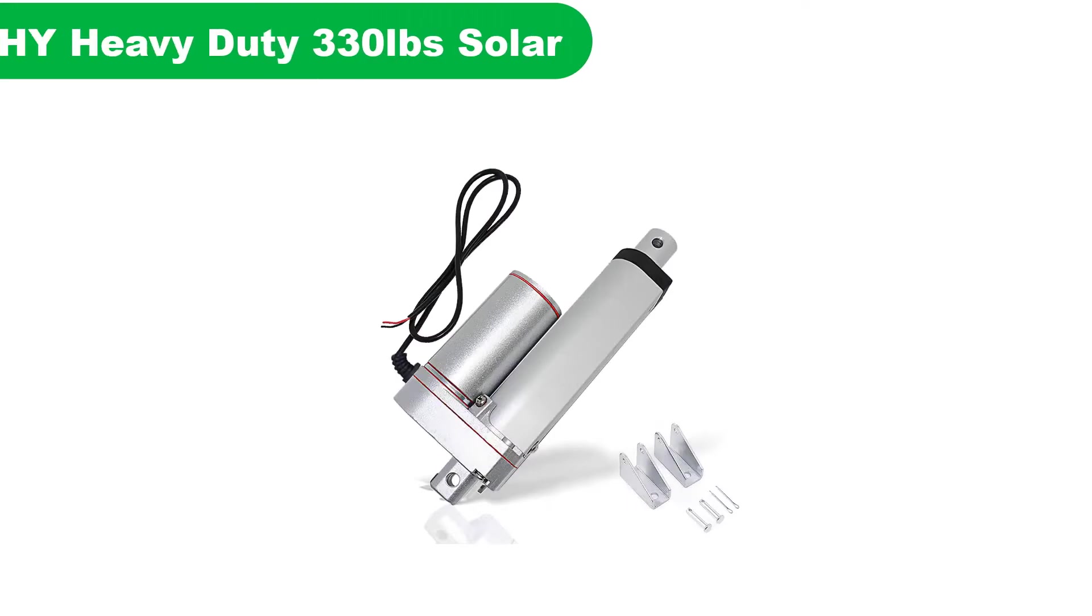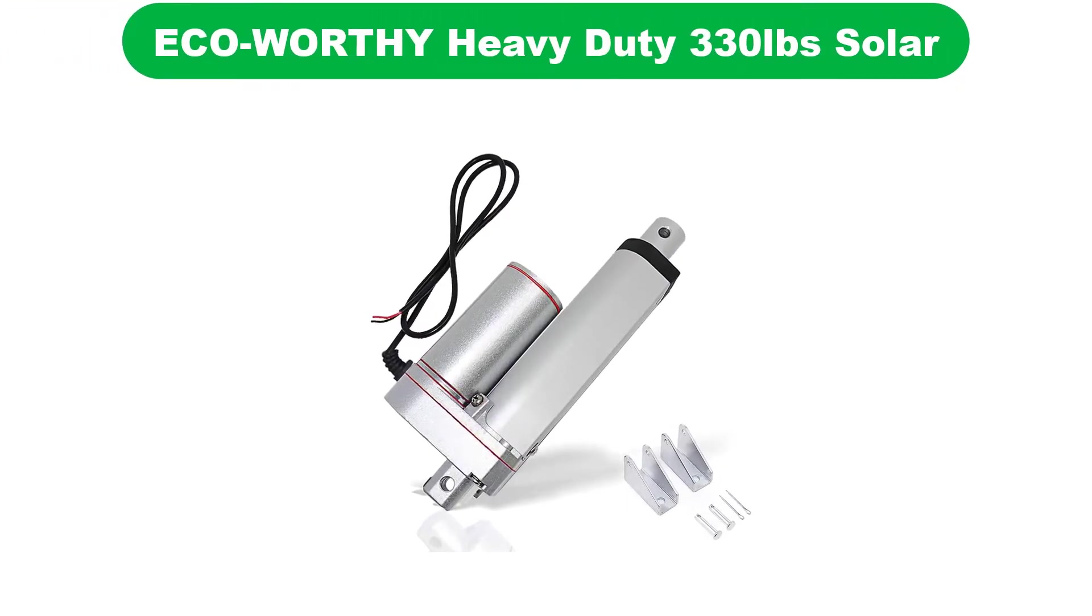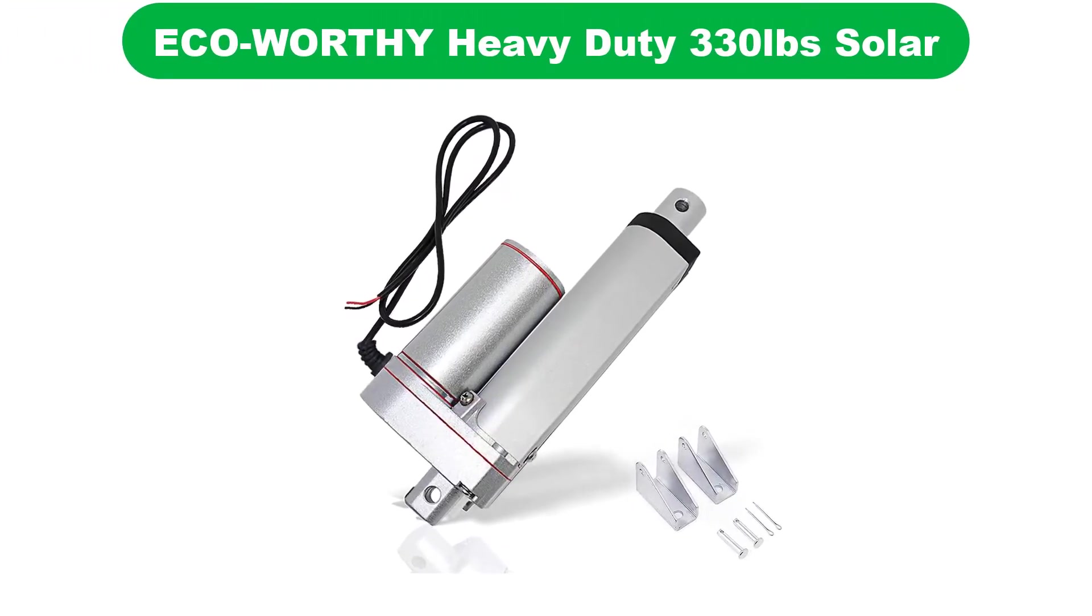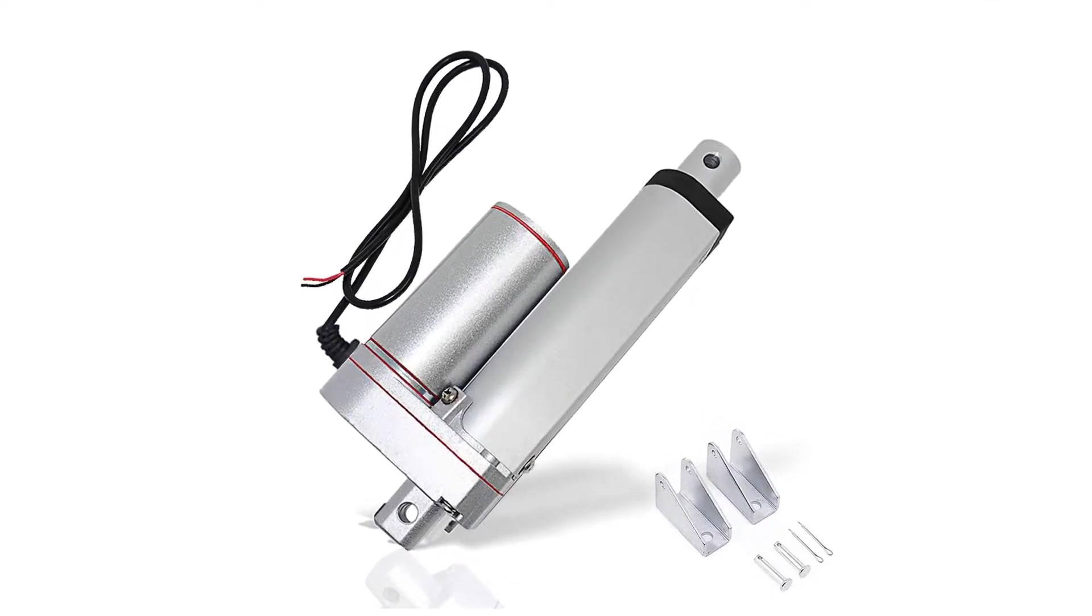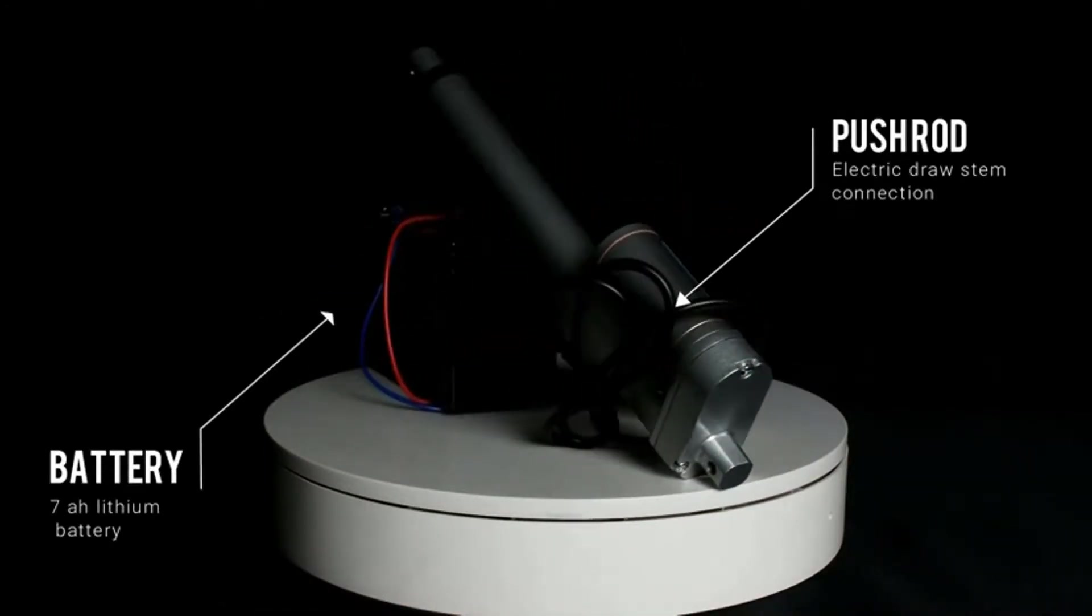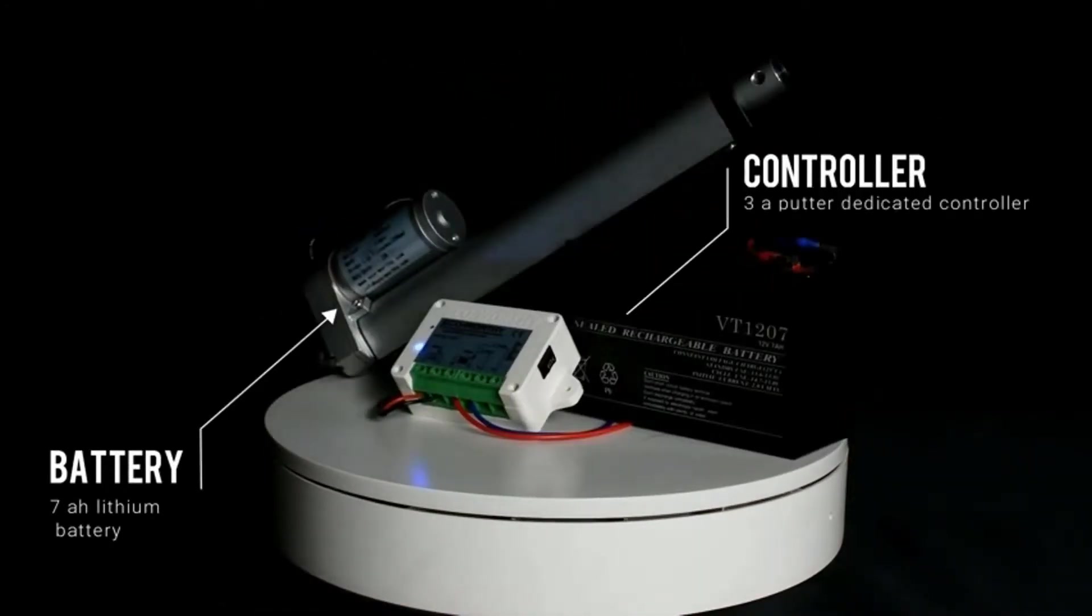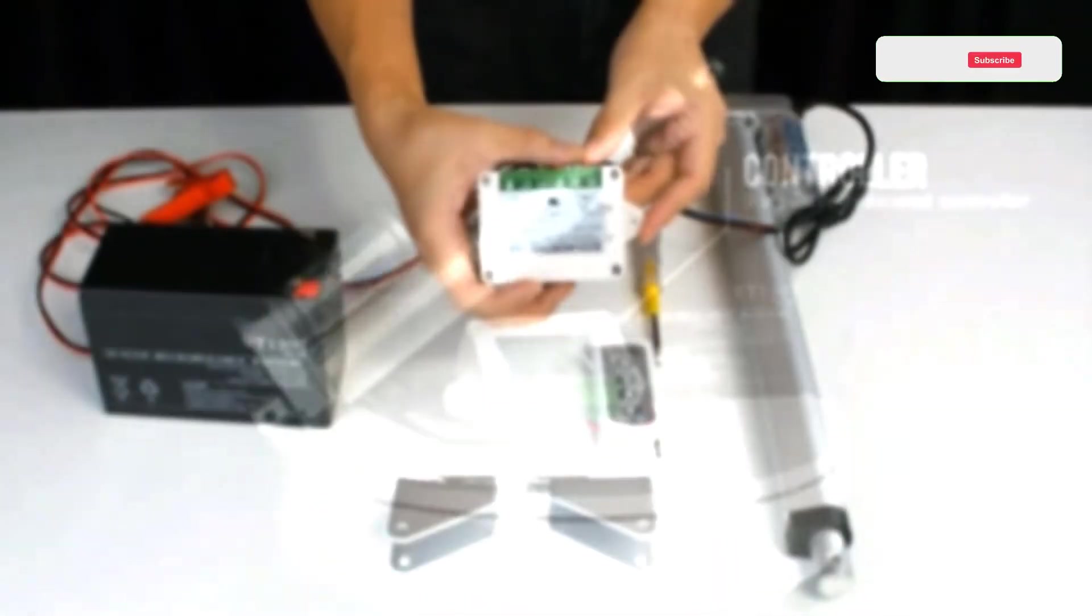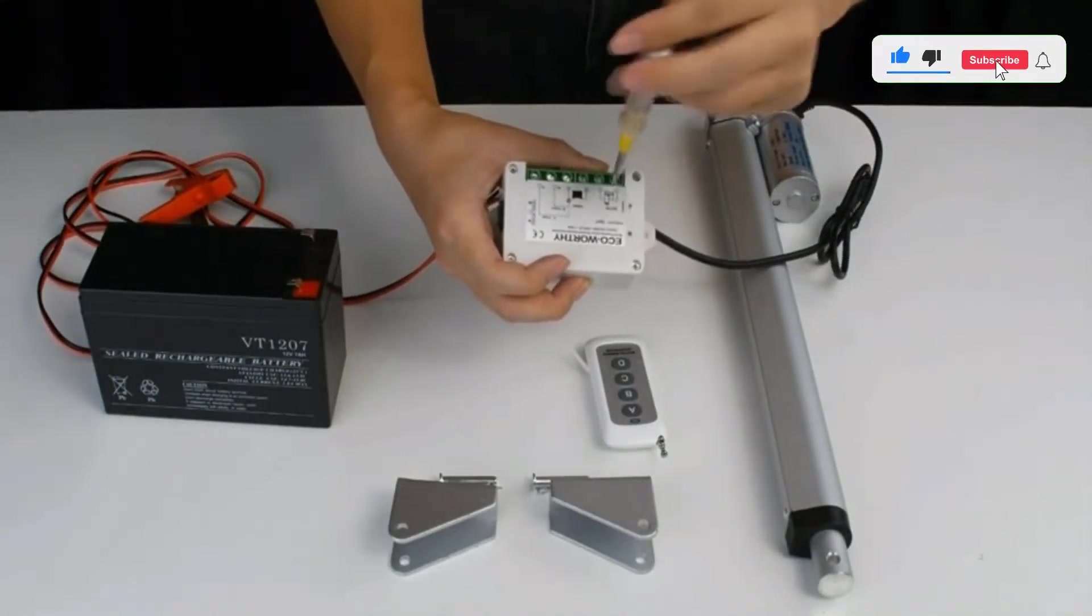Number 2. Our second best pick is ECOLWORTHY Solar Tracker Linear Actuator. As you can tell by its name, ECOLWORTHY makes products related to green power solutions like its linear actuators made for solar panels that offer great performance. ECOLWORTHY's linear actuator comes at the second position of this listicle as you get great performance out of it.